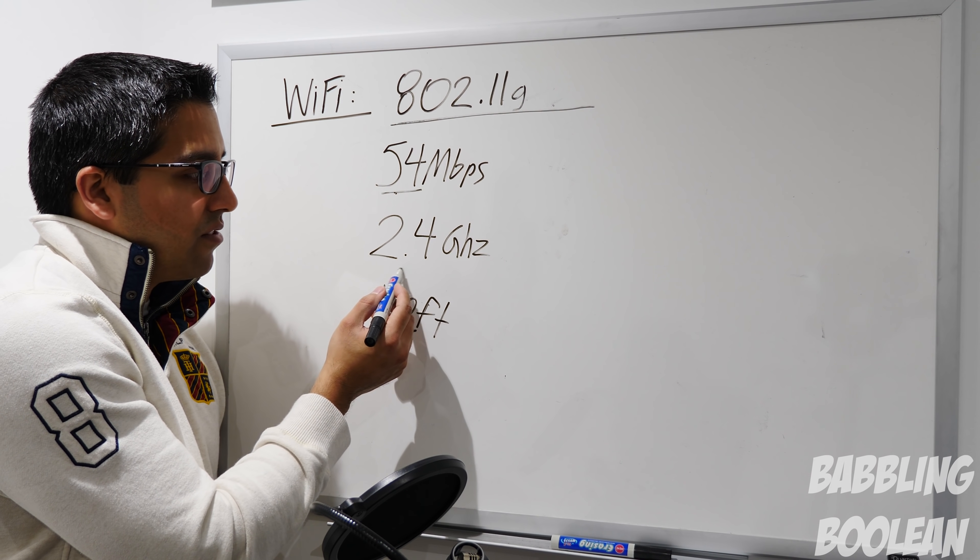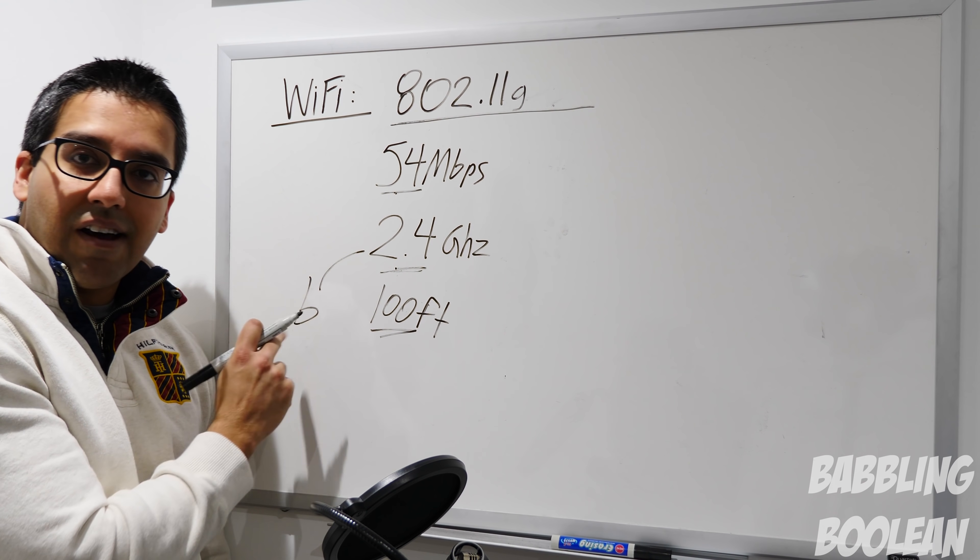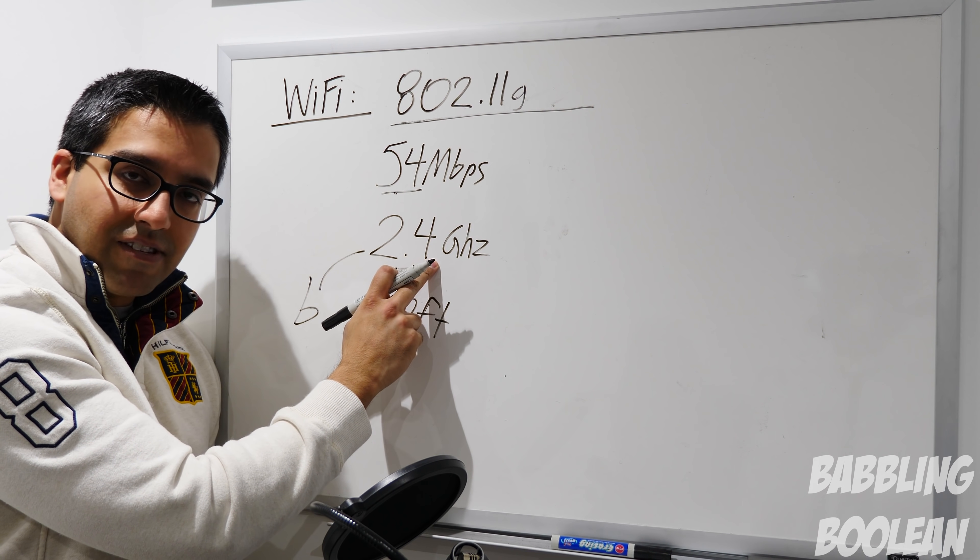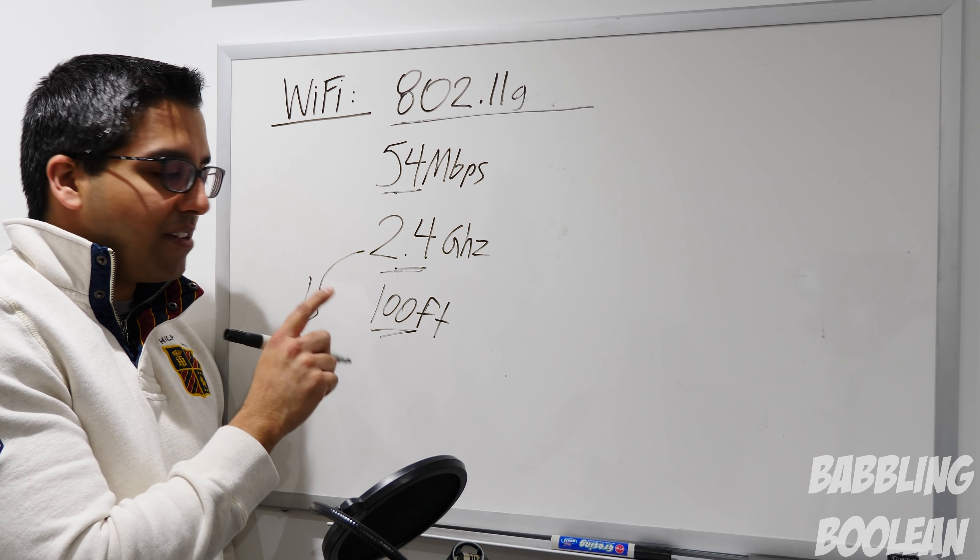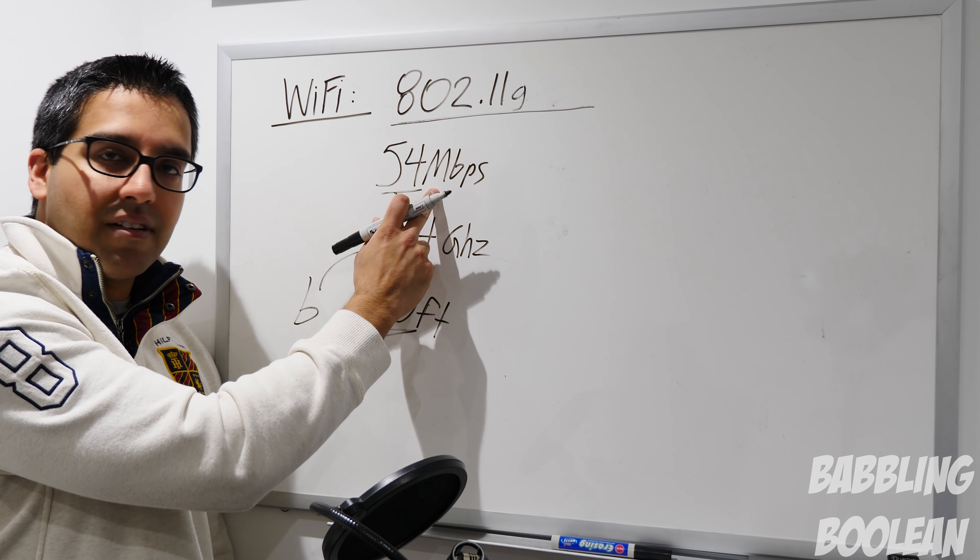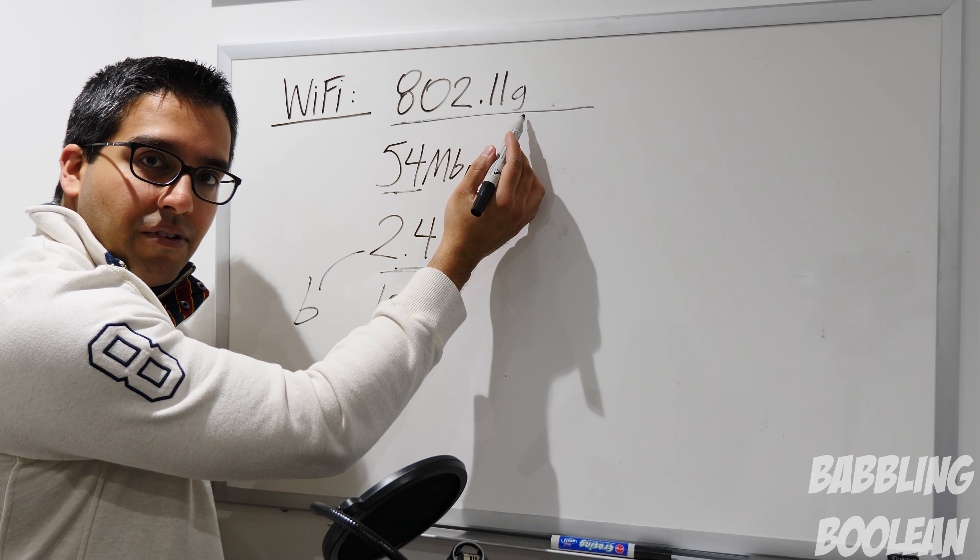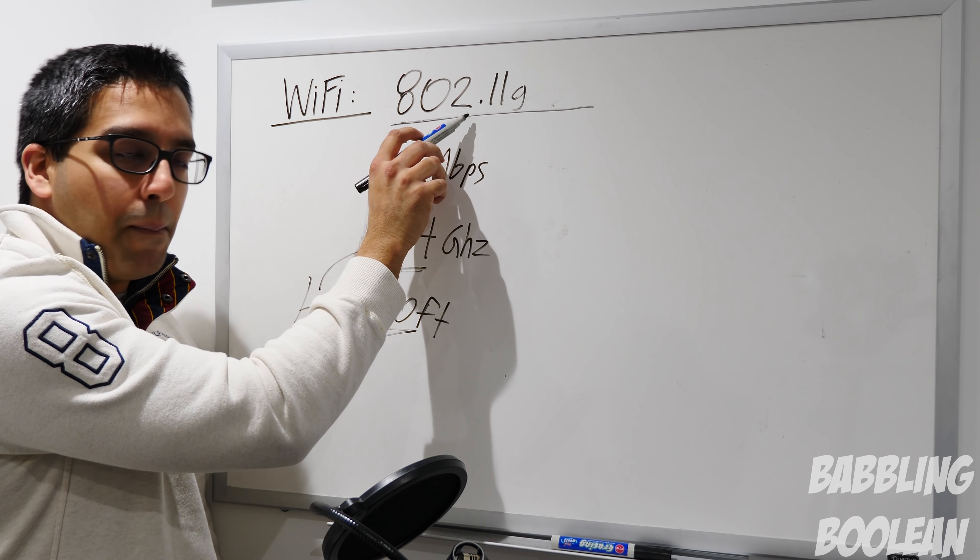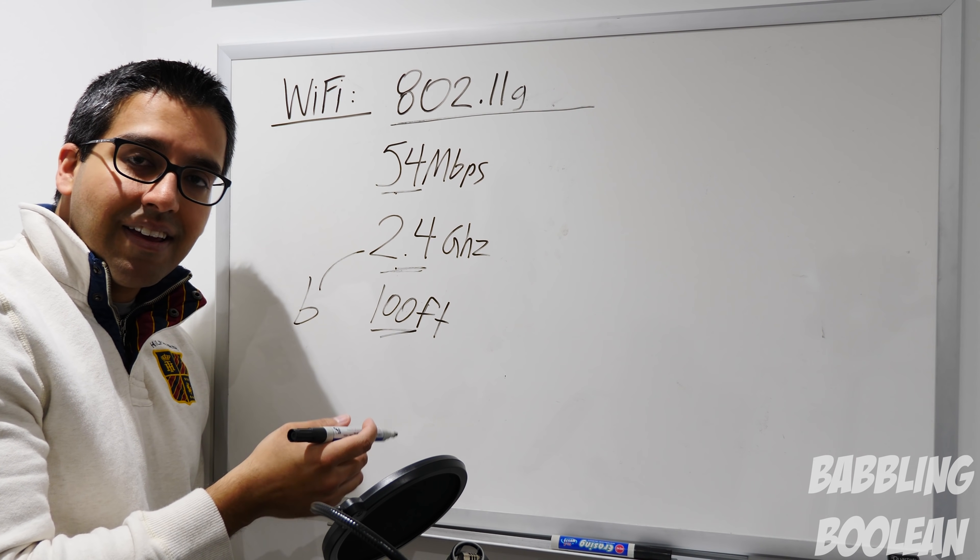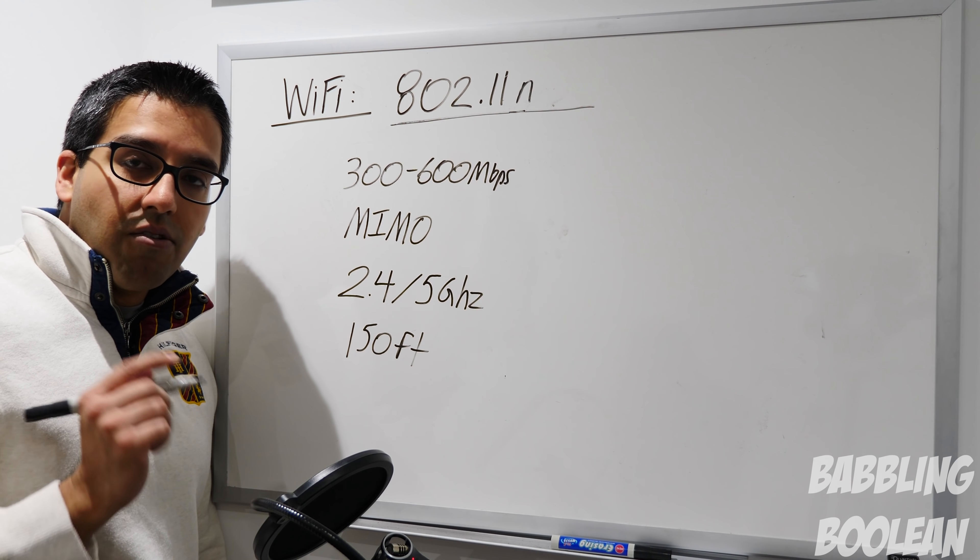The other thing about G is that because it all ran on 2.4 gigahertz signal, it's backwards compatible with B. So for example, if you had B devices at home but your access point was G, you could connect it with your B devices because they run on the same frequency. The only thing to keep in mind is that you would not get the G speed on B devices because B devices couldn't reach the speed - they would cap at 11 megabits per second. And the same thing in reverse, so if you had a B access point with G devices, the speed would cap at the B access point. This kind of follows through for all future devices that are backwards compatible. So for example, the next one is N, and N is backwards compatible with B and G, but the speeds will cap at your G and B devices.